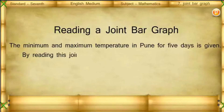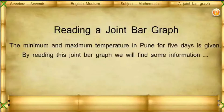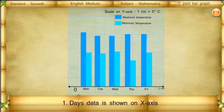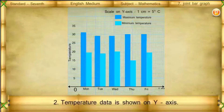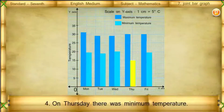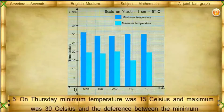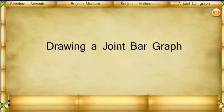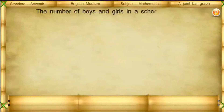Reading a joint bar graph: The minimum and maximum temperature in Pune for five days is given. Reading this joint bar graph, we find: the days are shown on the x-axis, temperature data is shown on the y-axis. On Monday there was the highest temperature. On Thursday there was minimum temperature. On Thursday, minimum temperature was 15°C and maximum was 30°C, and the difference between minimum and maximum temperature is 15°C.